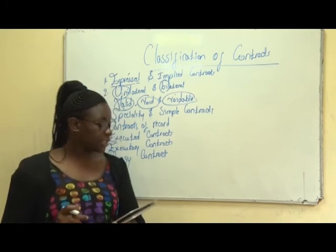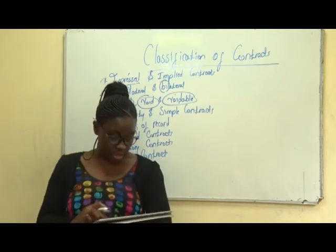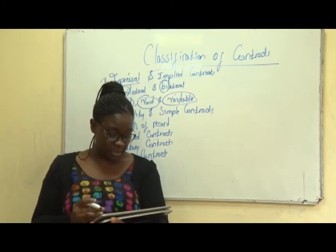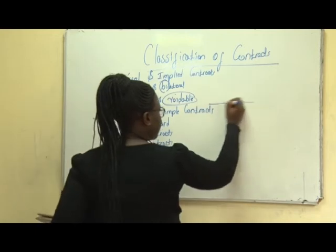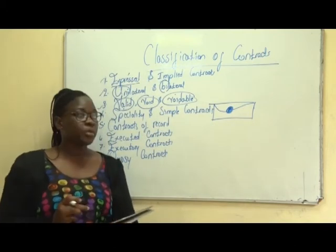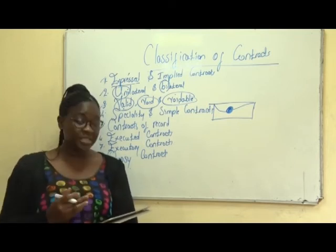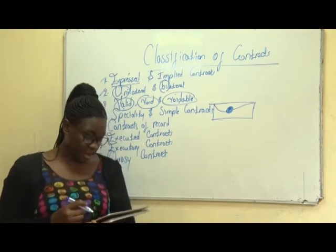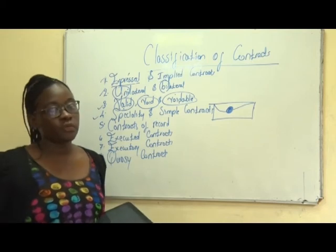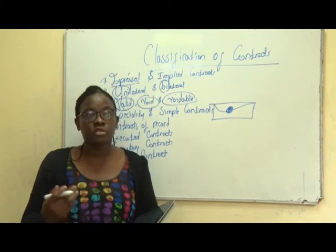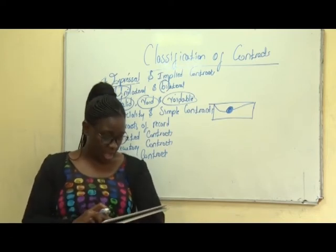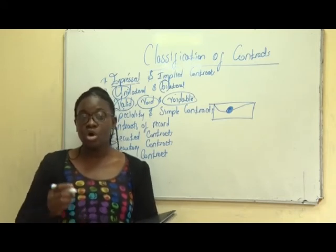Then we have specialty contracts and simple contracts. A specialty contract is also known as a contract under seal — it's an instrument that is signed and sealed. The contract is written, signed, put in an envelope and sealed. A simple contract, on the other hand, is an agreement expressed or implied which gives rise to legal obligation. A simple agreement may be in writing or agreed orally — you don't need any detailed sealing and documentation. This applies when you trust your supplier or whoever is paying you.